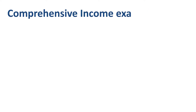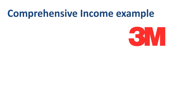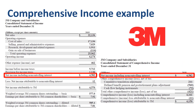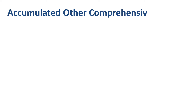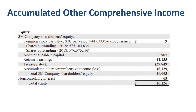Back to our earlier comprehensive income example for 3M. Now that we understand what is included in the statement of comprehensive income, the next step is to take the other comprehensive income for the year and add this to the year-end balance of accumulated other comprehensive income or loss that has been building up over the years within the equity section of the balance sheet of the company.